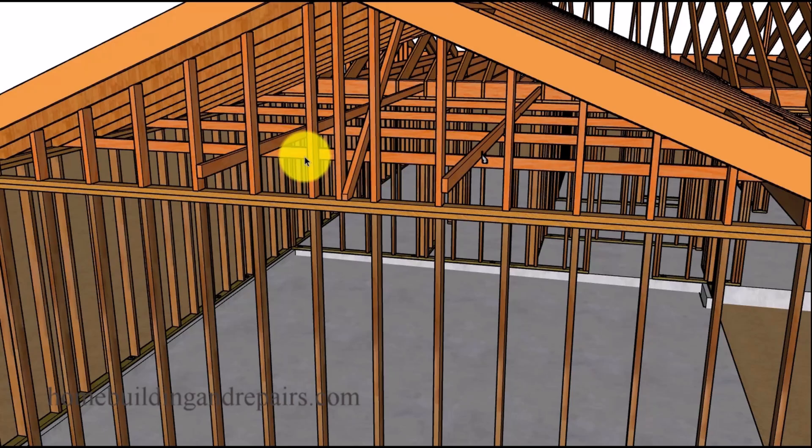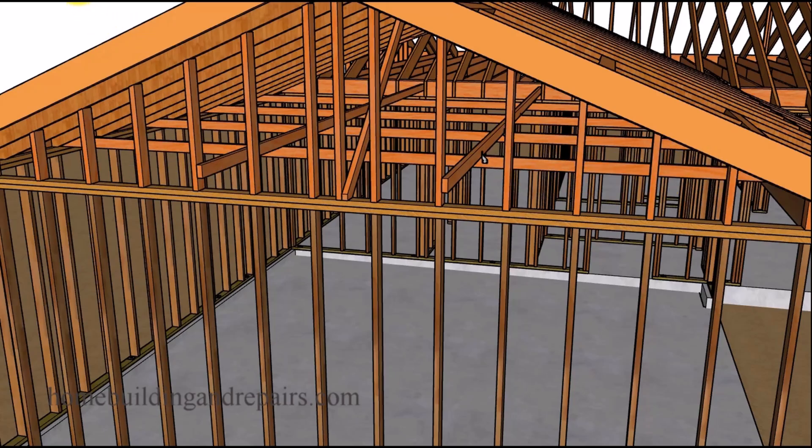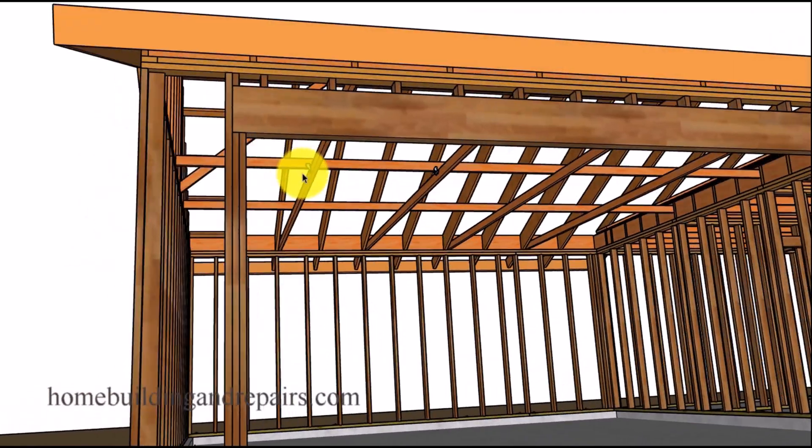A strong back in this case that's used in a garage with rafter ties is going to do two things. It's going to prevent the rafter tie from moving to the right or the left and in some cases prevent it from sagging too much.